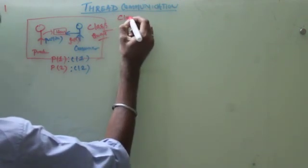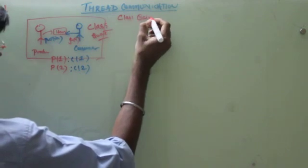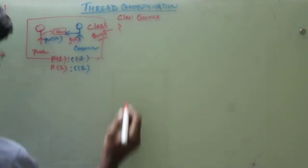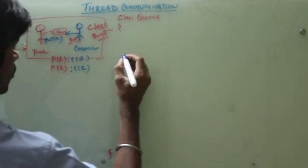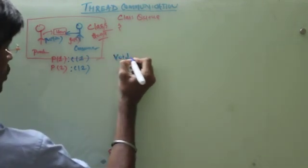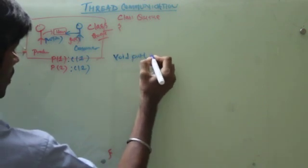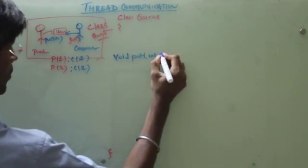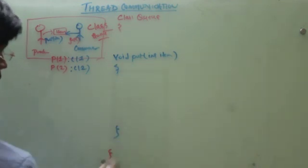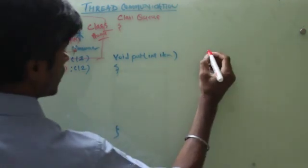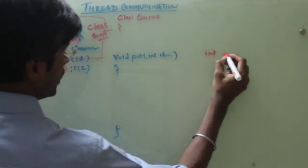We will say class queue. And we can say it has two methods. First one is put item. And second one is get item.